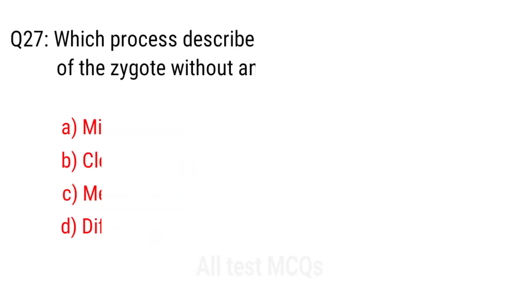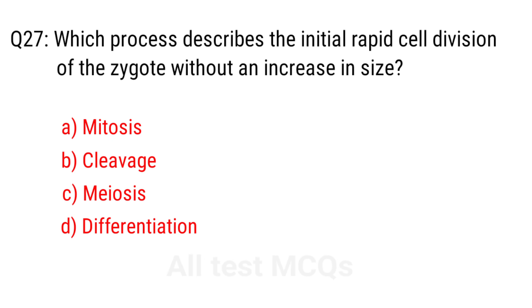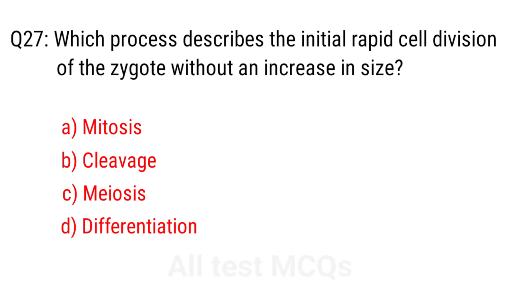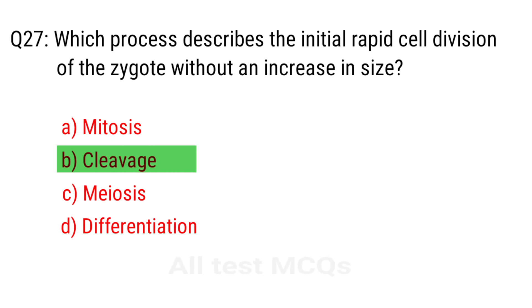Q27. Which process describes the initial rapid cell division of the zygote without an increase in size? The right answer is option B: Cleavage.